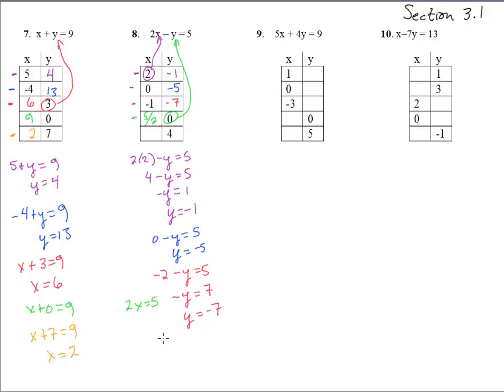We stick in 4 for y and we get 2x minus 4 equals 5. Add 4 and we get 2x equals 9. Divide by 2 and we get x equals 9 halves. You can punch that in your calculator and get like 4.5 if you want. Something like that. Good.